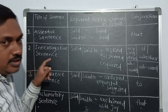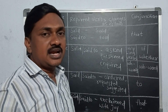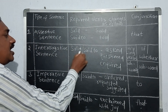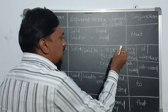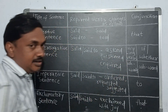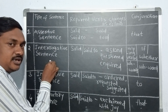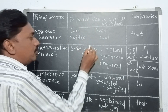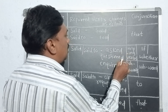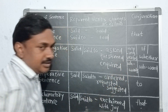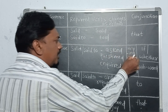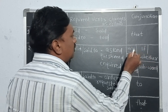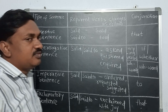For interrogative sentences, the reported verb 'said' or 'said to' changes to 'asked', 'questioned', or 'inquired'. As it is an interrogative sentence — a question sentence — the reported verb becomes 'asked', 'questioned', or 'inquired'. The conjunction used is 'if' or 'whether' for sentences that begin with helping words.